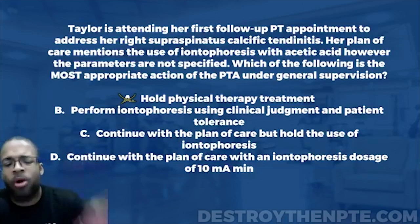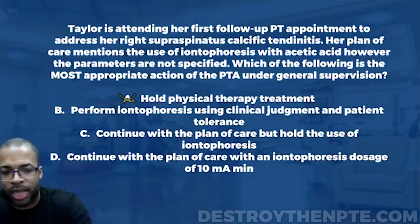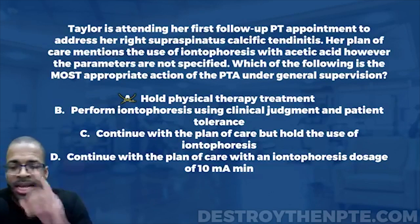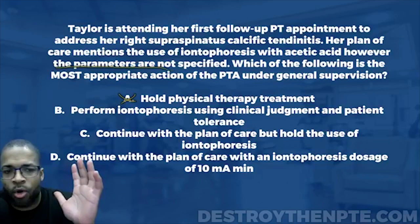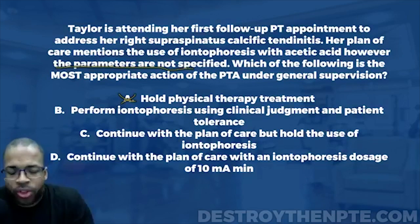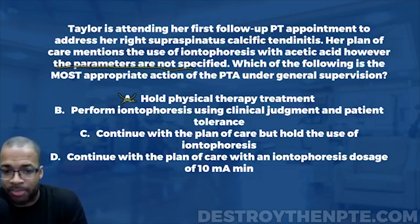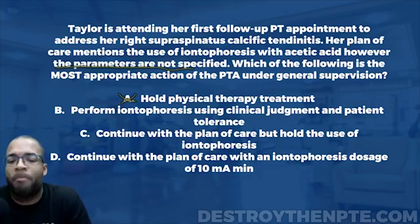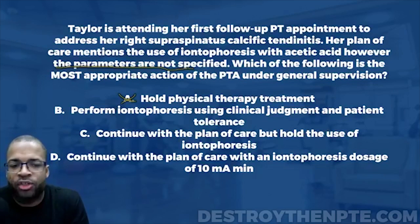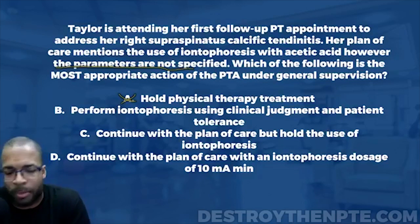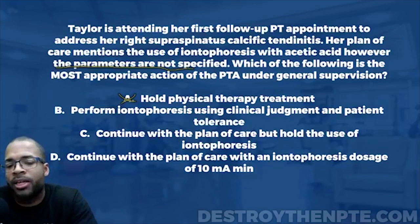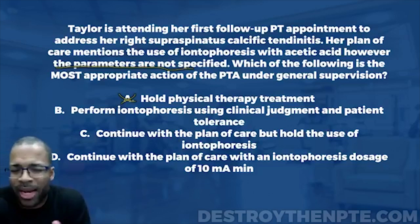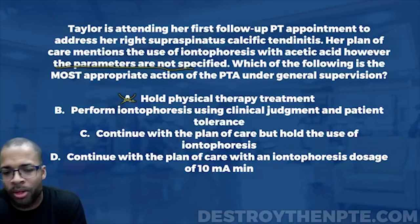Answer B says perform iontophoresis using clinical judgment and patient tolerance. This goes against what we just established. Yes, the PTA can use clinical judgment to stop if a patient is in pain, but it's not just about avoiding harm — it's about making the patient better optimally and getting them back as quickly as possible. We don't just apply iontophoresis and wait to see if the patient gets painful. It's outside the PTA's scope to determine these specific parameters.